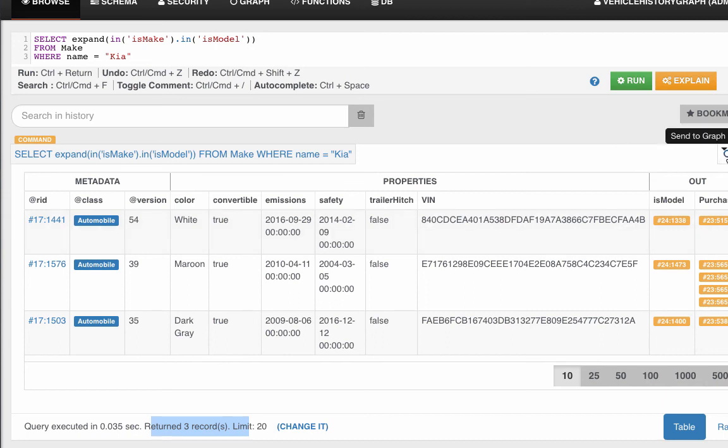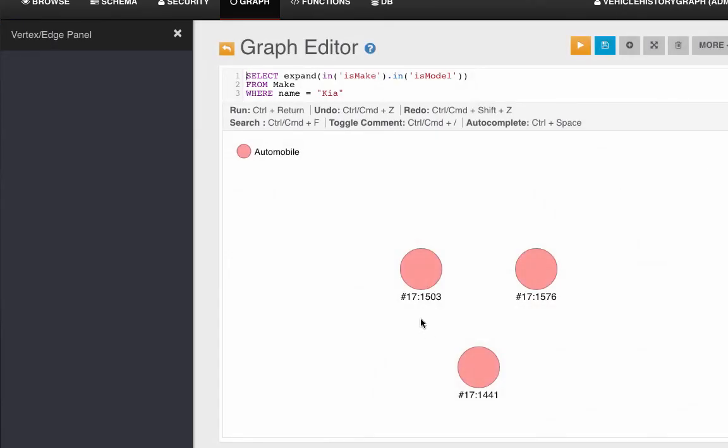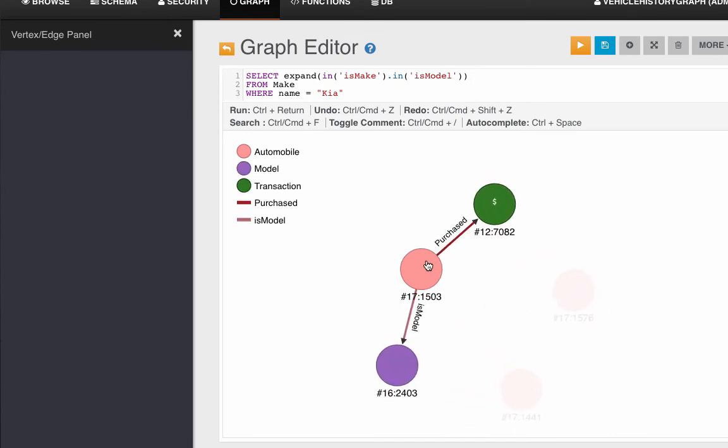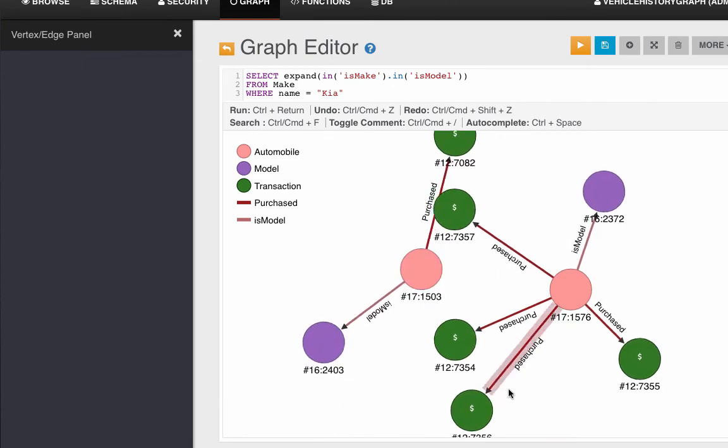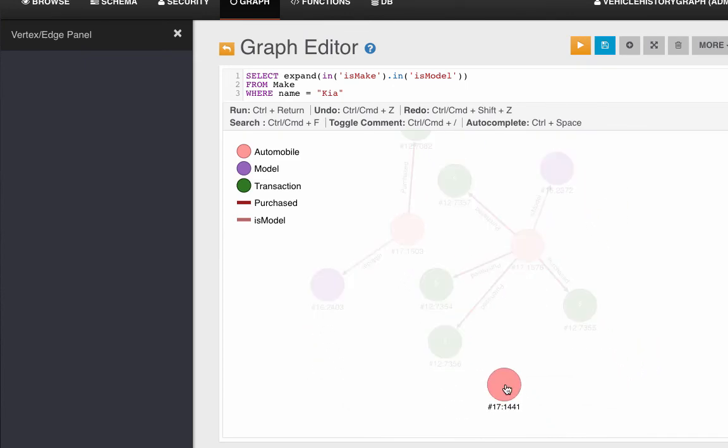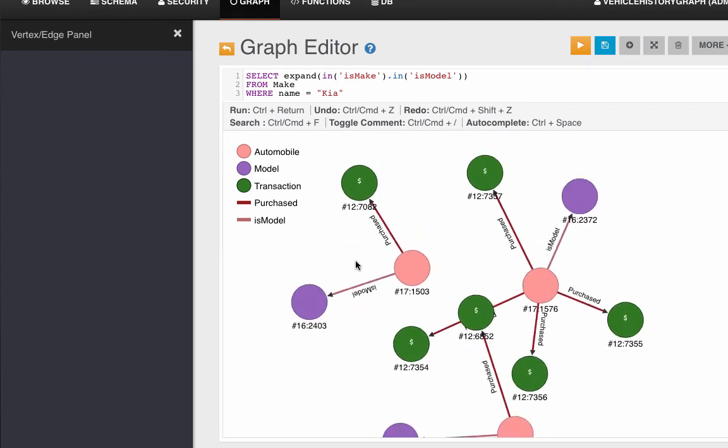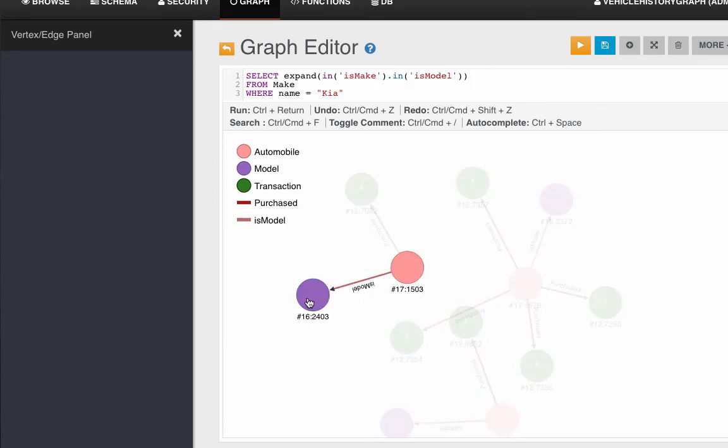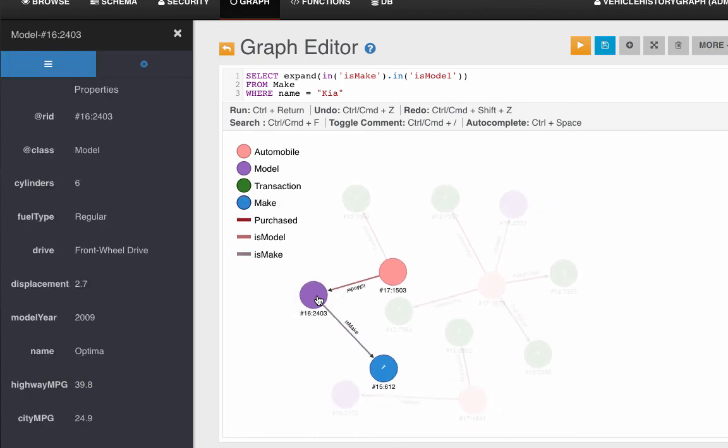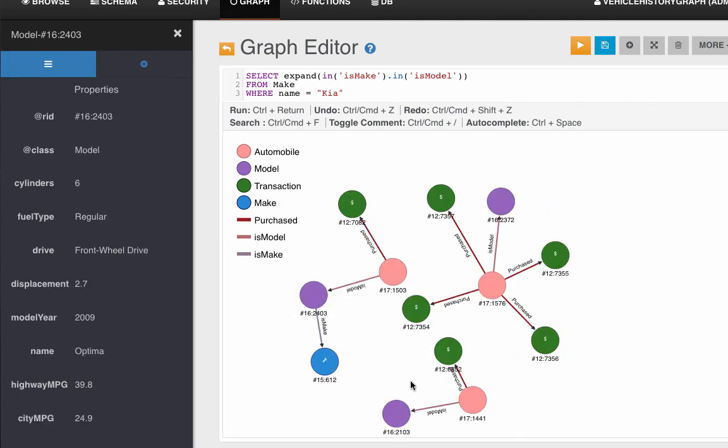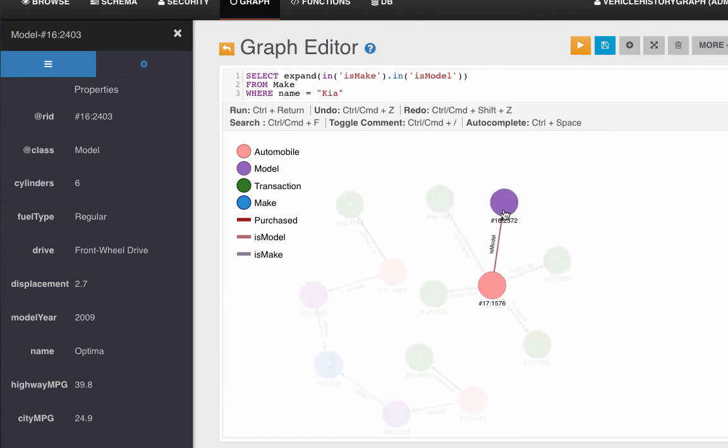Now let's look at this in a graph to see a little bit more. We can double click on all of these automobiles to find the models and the transactions that they are involved in. If we travel out on isModel, we can see that these models all point to the make KIA.